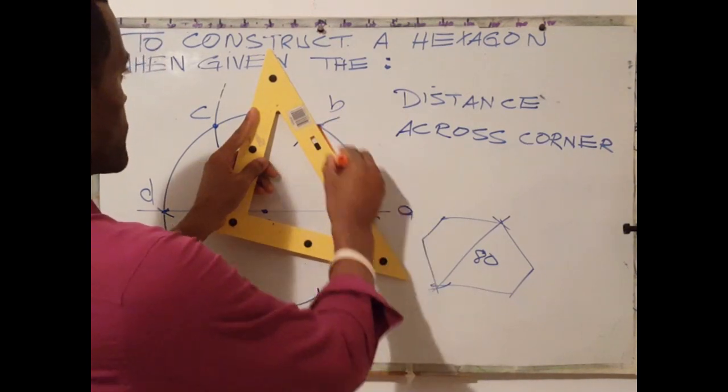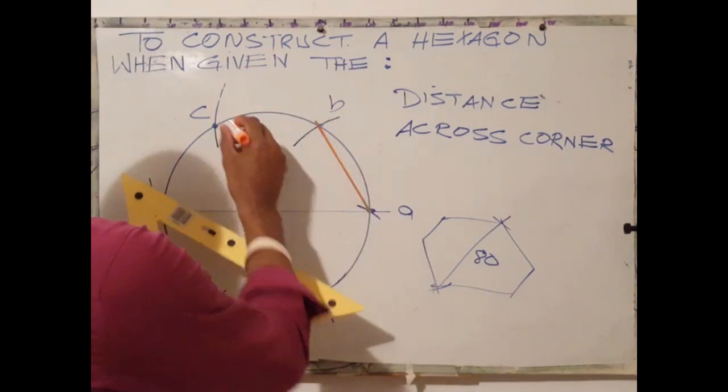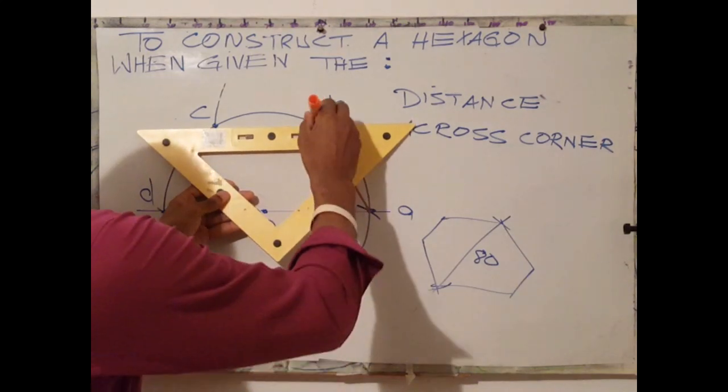Place the pencil at point A, align line to point B, draw the first line.